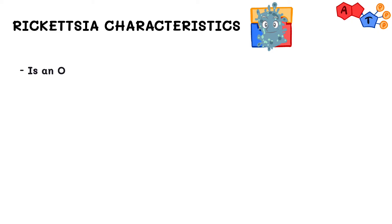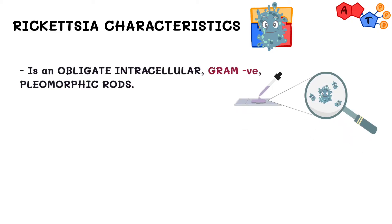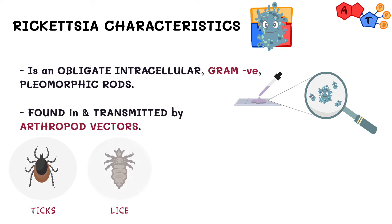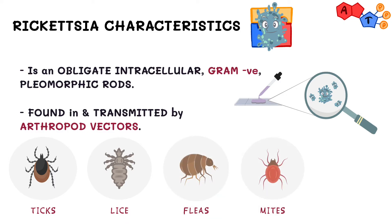Rickettsia is a diverse collection of obligately intracellular gram-negative pleomorphic rods that are found in and transmitted by arthropod vectors like ticks, lice, fleas, mites, chiggers, and mammals. Its survival depends on entry, growth, and replication within the cytoplasm of eukaryotic host cells.